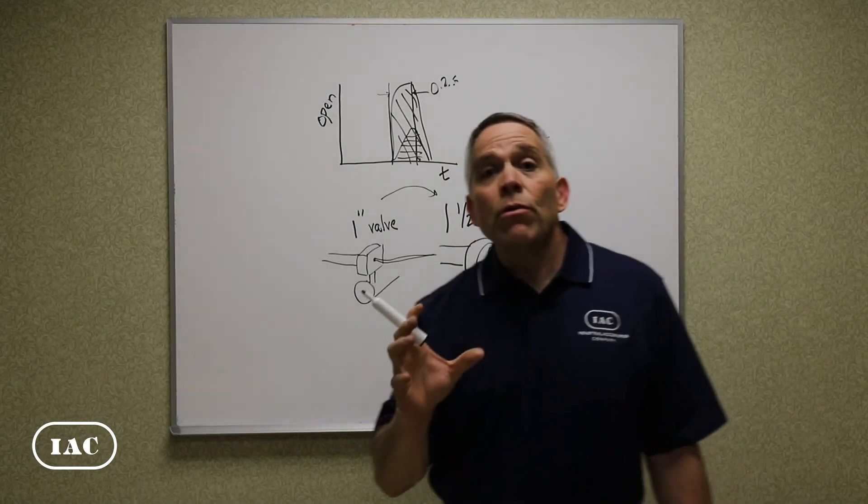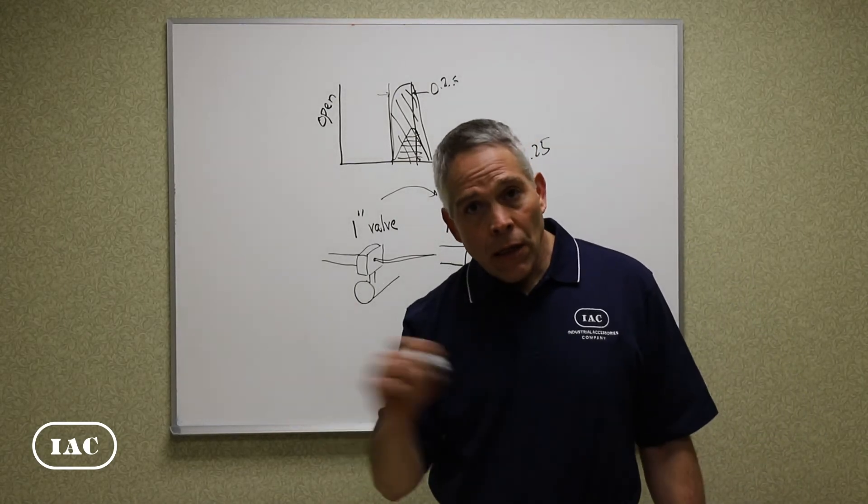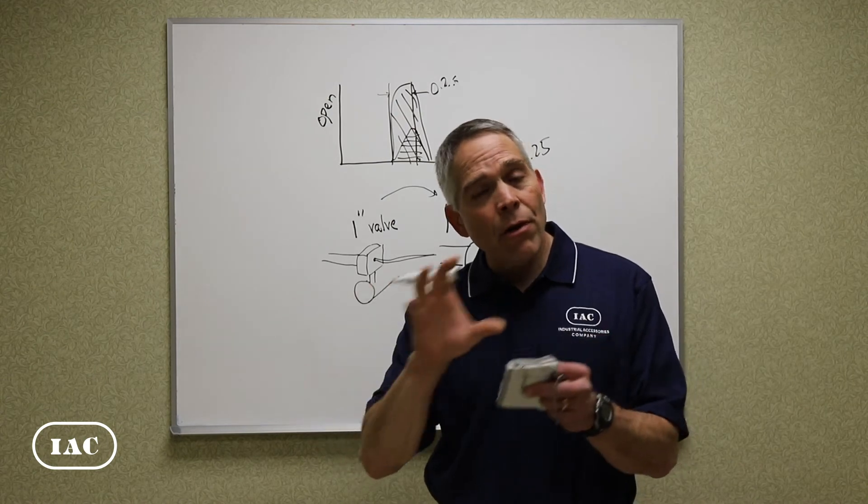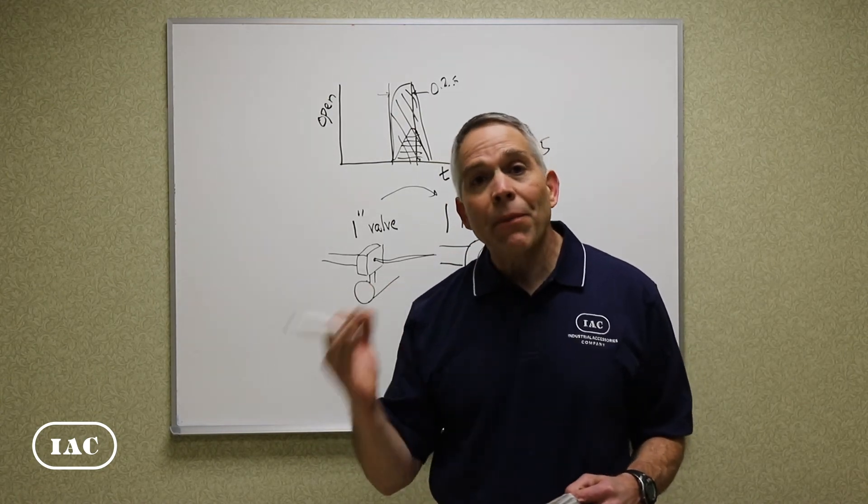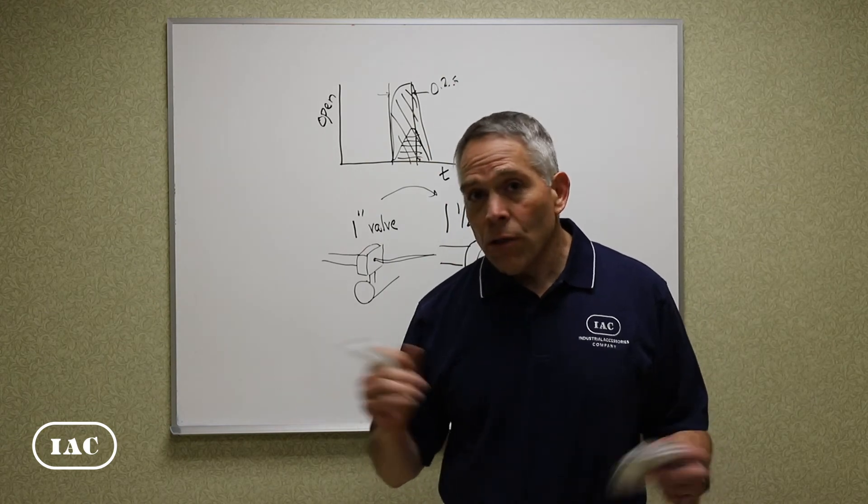So sometimes the solution is to do an upgrade that can be done by cutting on the wall putting a bigger header and a bigger pulse valve. You also need a bigger blow pipe but that can make a big difference in your production equipment.